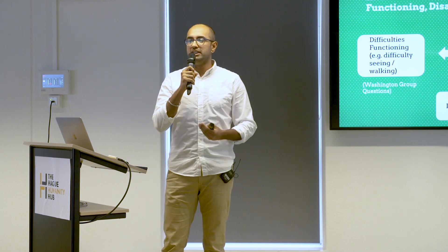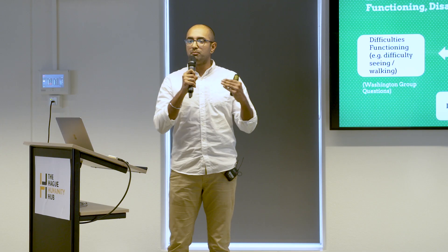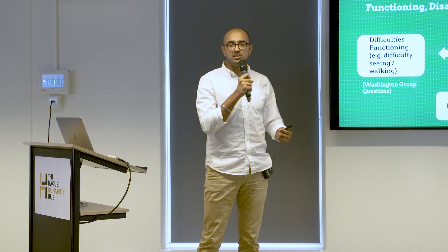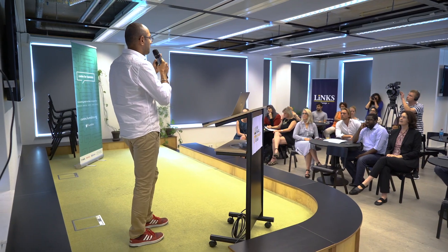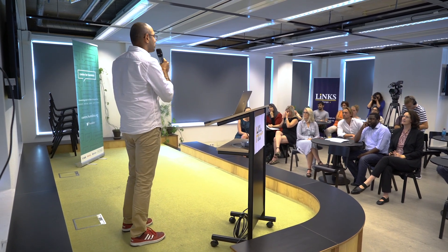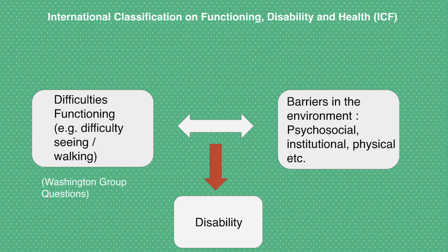Before we go into the details, we first have to have a definition of disability. The International Classification on Functioning Disability and Health provides us just that. It defines disability as something that arises from an interaction between a person's difficulties functioning — for example, difficulty seeing or walking — and the barriers faced in the environment, such as psychosocial barriers, institutional barriers, and physical barriers. The interaction of these then generates disability.